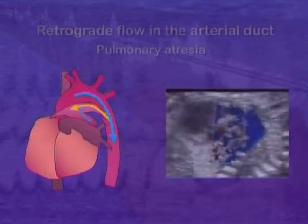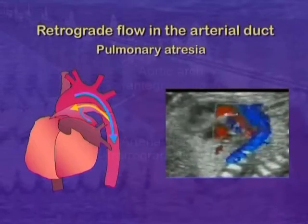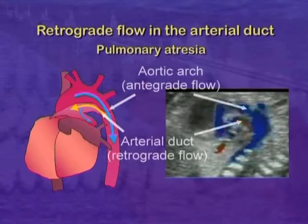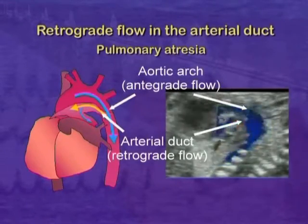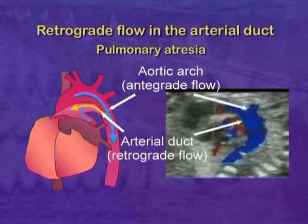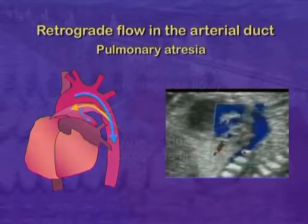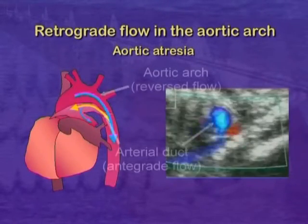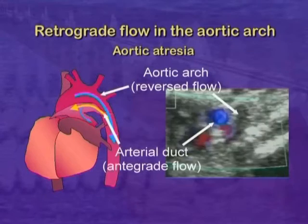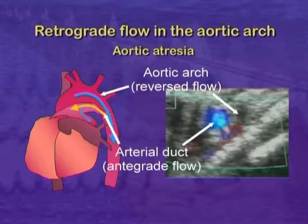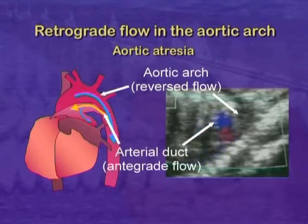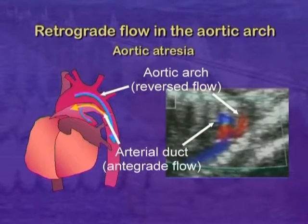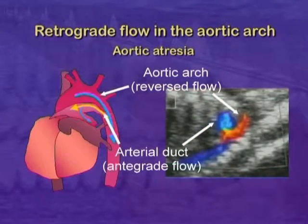However, in pulmonary atresia, retrograde flow into the pulmonary artery from the arterial duct can be shown. Conversely, in aortic atresia, flow in the arterial duct is antegrade, but that in the aortic arch is retrograde towards the heart.